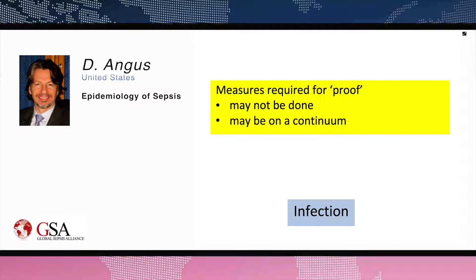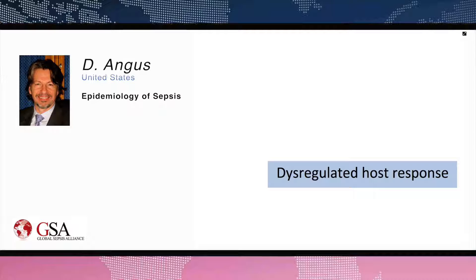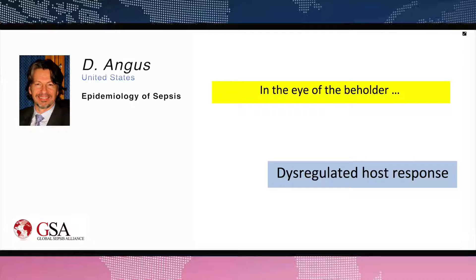Starting with infection: whatever measures we use to prove someone is infected, those measures may not actually be done. For those that are measured, they may be on a continuum, yet we need to divide them into infected yes versus infected no. For the dysregulated host response, basic science justifies the concept, but we don't have any clear clinical mechanism to determine when a host response is dysregulated or not — so it largely stays in the eye of the beholder.